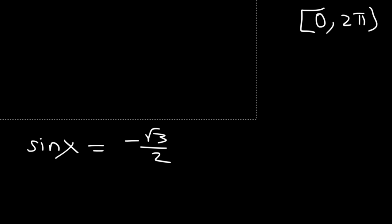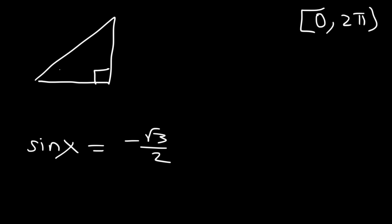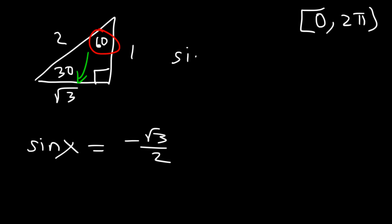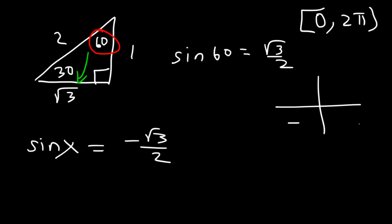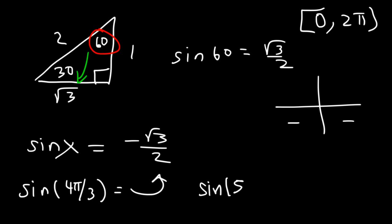Now find the reference angle. Drawing the 30-60-90 triangle: opposite the 30° is 1, opposite the 60° is √3, and the hypotenuse is 2. The angle must be 60° because sine equals opposite (√3) divided by the hypotenuse (2). So sine 60°, or sine π/3, equals √3/2. But we need angles in quadrants 3 and 4 where sine is negative. 240°, or 4π/3, has a reference angle of 60°. And 5π/3 also has the same reference angle as π/3.